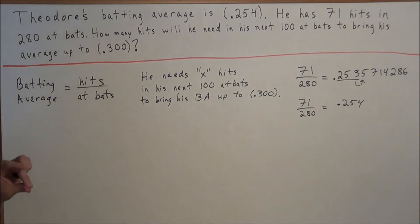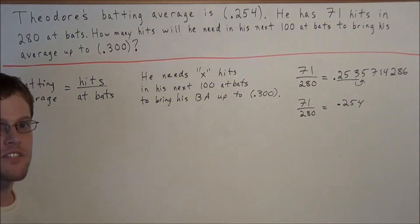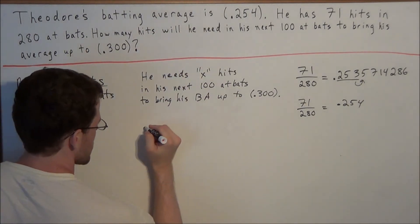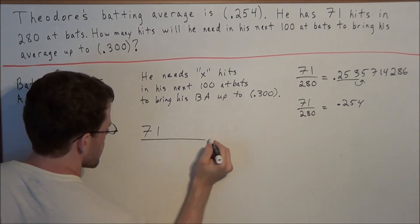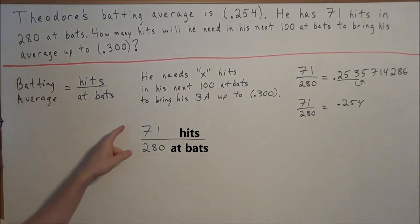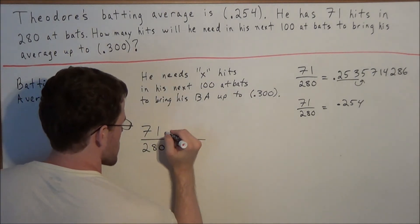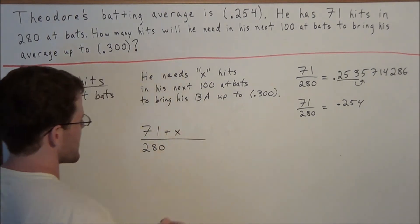So what this means is, notice how right now he has 71 hits in 280 at bats. Well, if he gets x hits, so we're going to start off with the original ratio of 71 over 280. If he gets x hits, notice how he already has 71 hits. So if he gets x more hits, he's going to have 71 plus x hits.